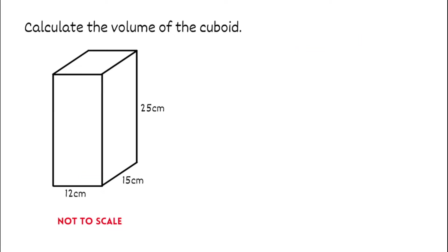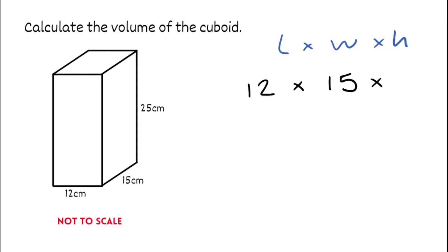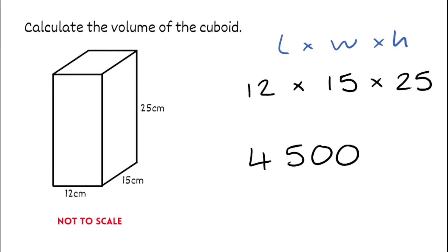Looking at this next question, again we've got to calculate the volume of the cuboid. We take our formula — the volume of a cuboid is length times width times height — and substitute our numbers in. The length is 12 centimetres, we multiply by the width which is 15, then multiply by the height which is 25. Typing that into the calculator, we get 4,500. We've got to remember to use the correct units — centimetres — so the volume would be 4,500 centimetres cubed.